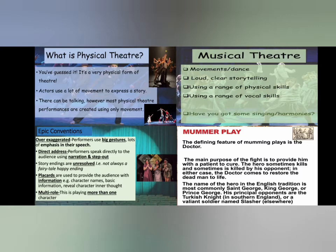Musical theatre includes movement and dance, loud and clear storytelling, and uses a range of physical and vocal skills. Epic conventions involve over-exaggerated performances where performers use big gestures and lots of emphasis in their speech. Direct address — where performers speak directly to the audience using narration and step-out — is also used. Story endings are unresolved, i.e. not always a fairy tale happy ending. Performers use placards — big sheets of paper — which provide the audience with information, for example character names, basic information about the character, or revealing their inner thoughts.